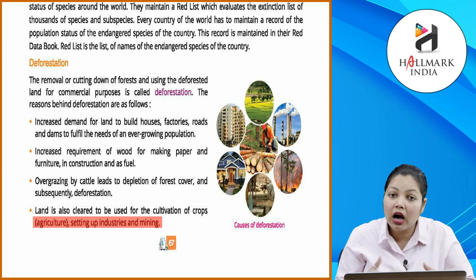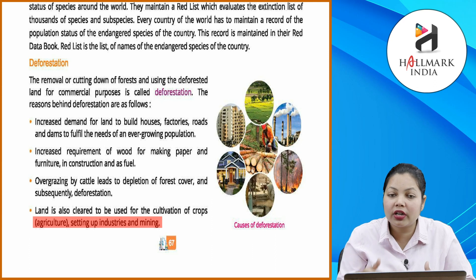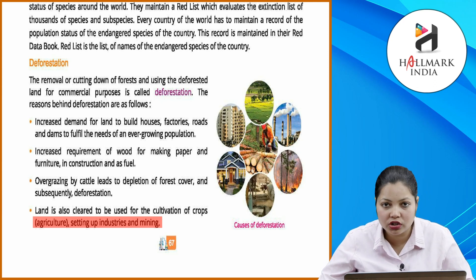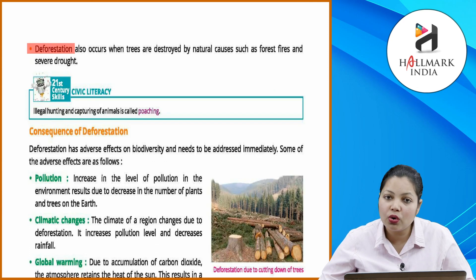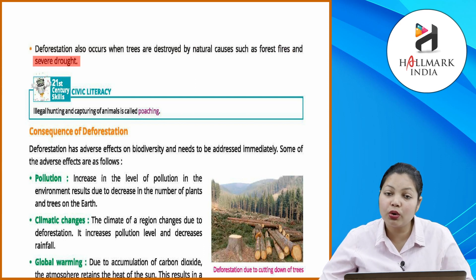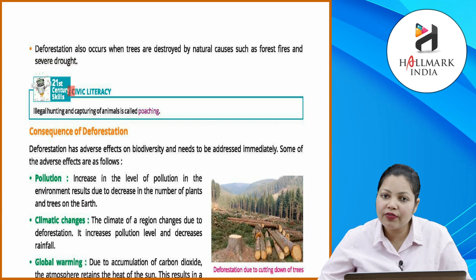Land is also cleared for the cultivation of crops, agriculture, setting up industries, and mining. Deforestation also occurs when trees are destroyed by natural causes such as forest fires and severe drought. Illegal hunting and capturing of animals is called poaching.